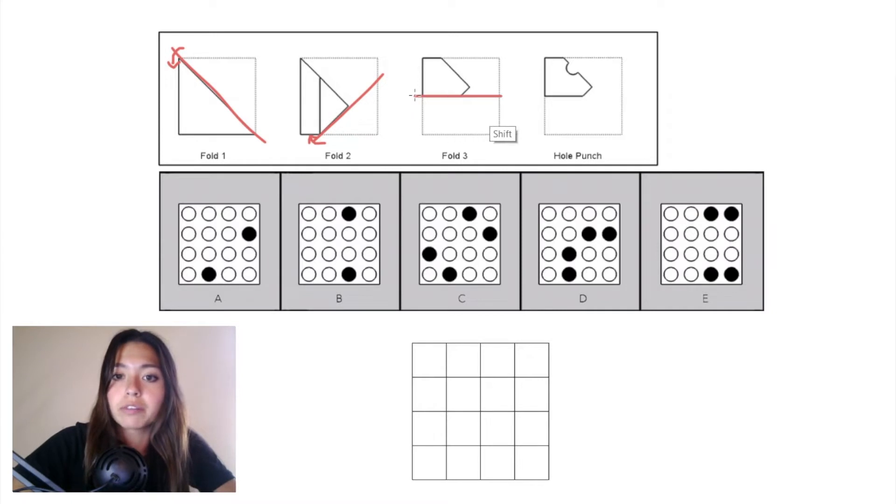In fold three, we have a horizontal plane and we're folding whatever was left on that bottom half of paper up into this piece. We have one hole punch in the top row in the second column.